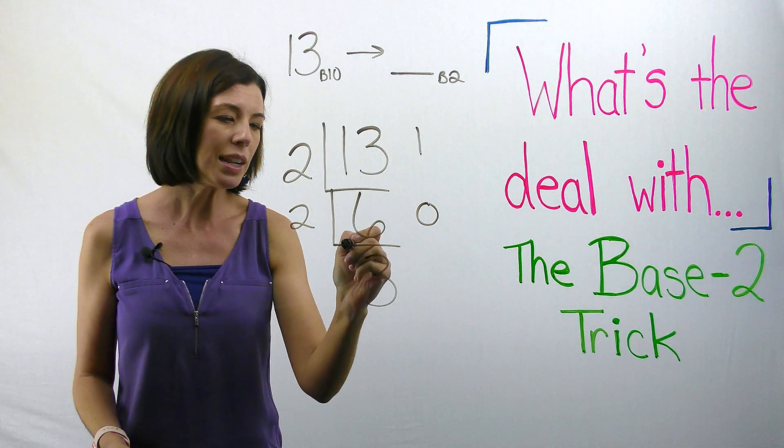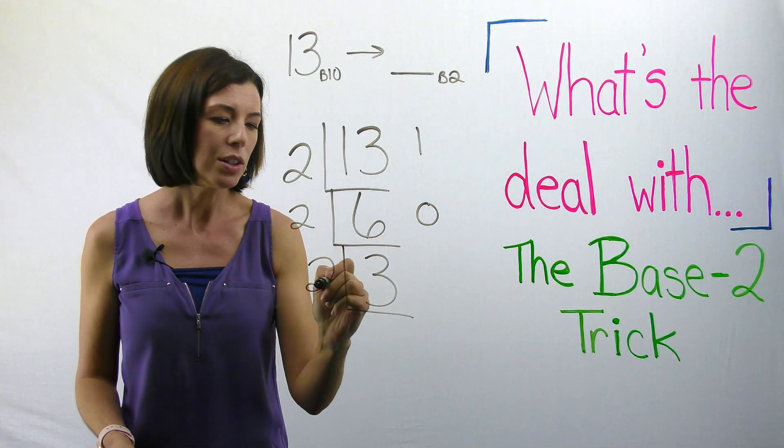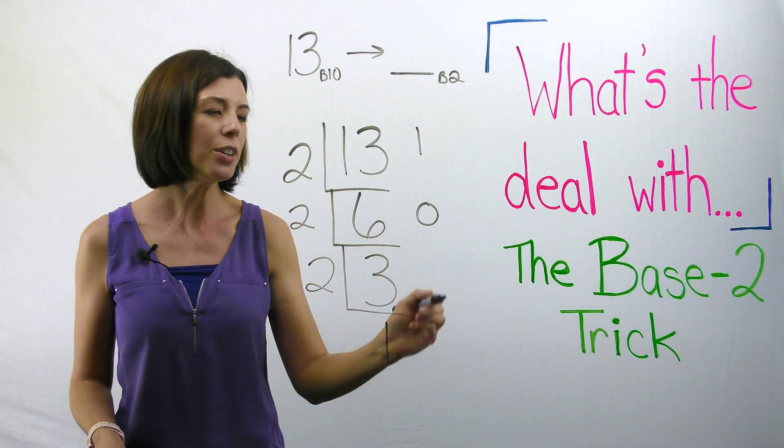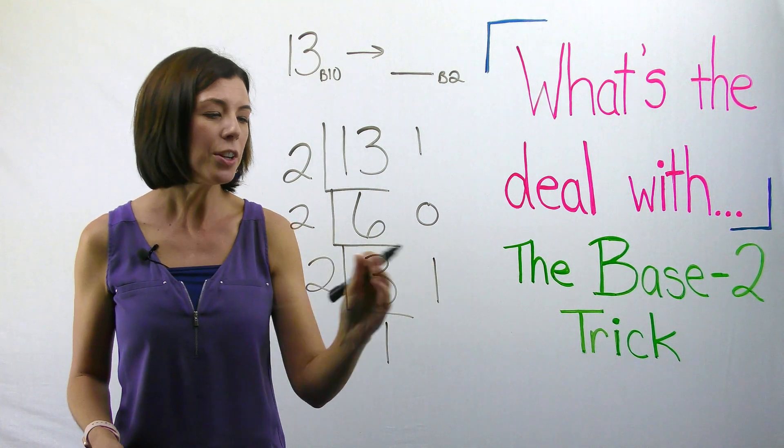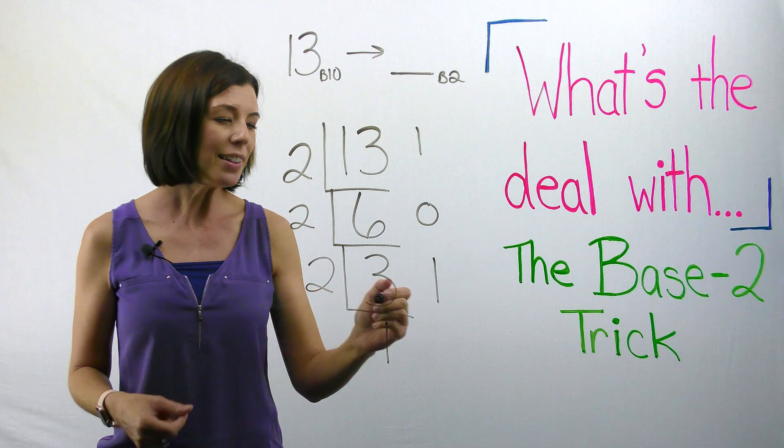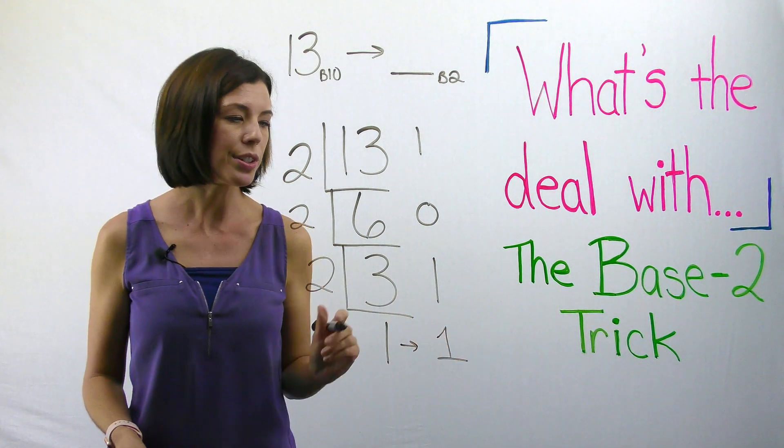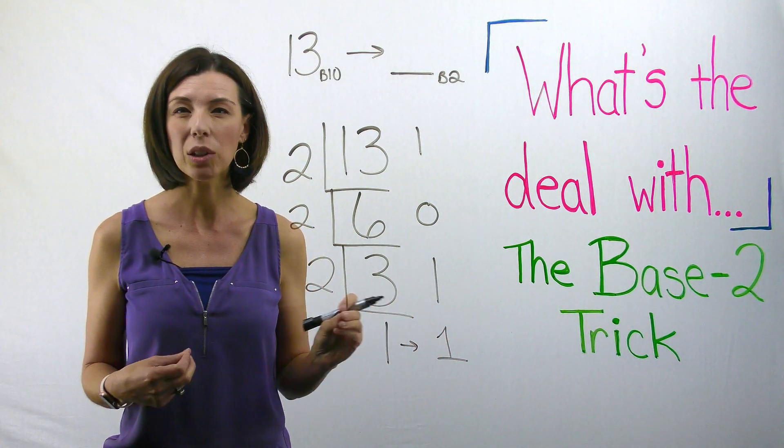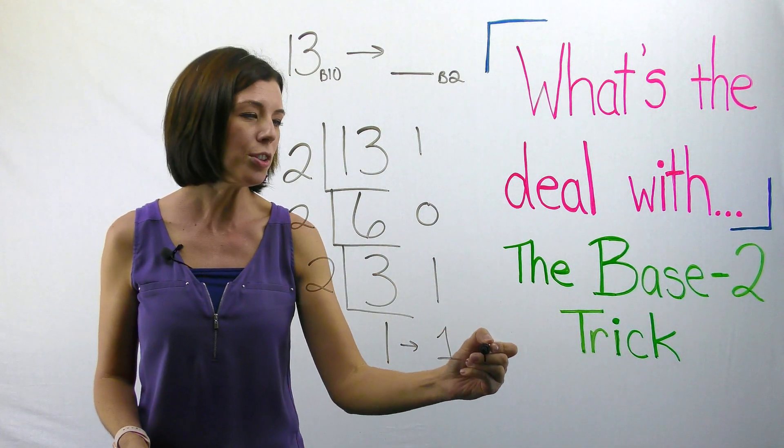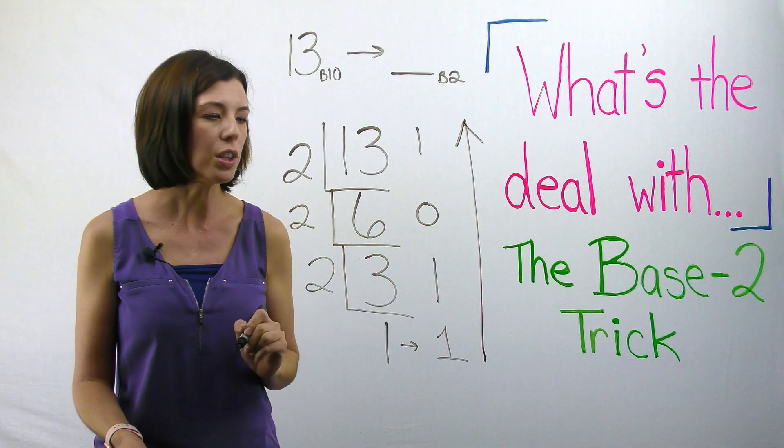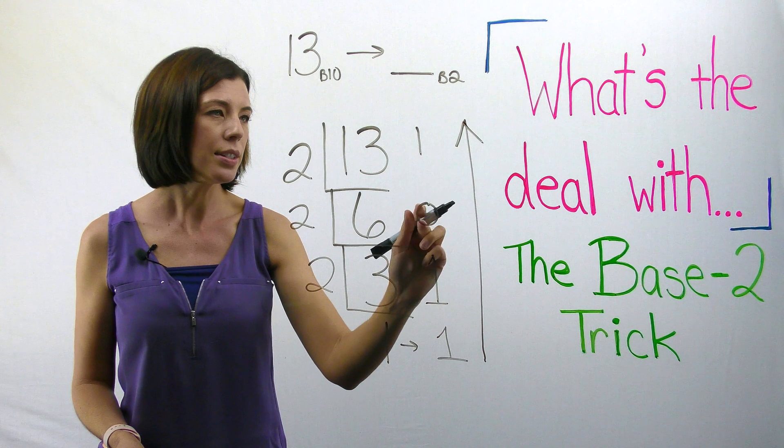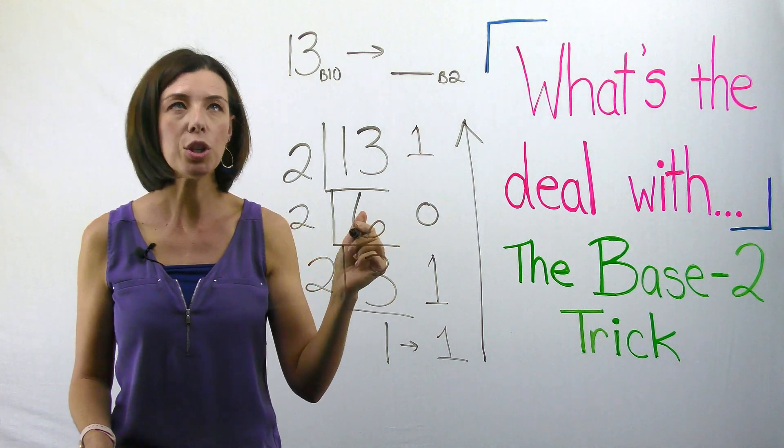Now I'm going to say three divided by two. Well I know it goes in one time and I know that I have a remainder of one. Now I can think of this one as just kind of staying over here by its lonesome self. And how I get my answer is on the trick it tells you to reverse the order. So I'm going to write one, one, zero, one base two.